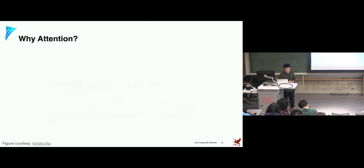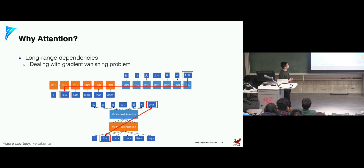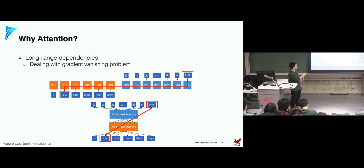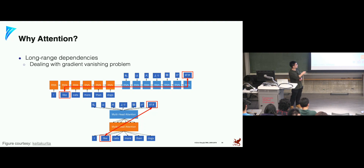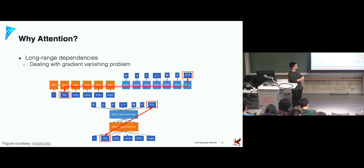Why do we want attention? First, it addresses the long-term dependency issue. With attention, we can shorten the path between output and input. In a standard recurrent network, if the corresponding input token is far away, the gradient backpropagation path is very long and suffers from vanishing gradients. But with attention mechanism, there is a direct pathway from the output token to the relevant input token, shortening that path.